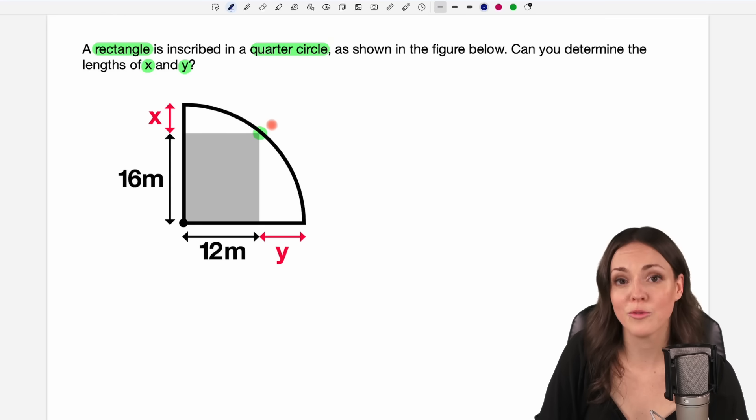And these points are usually very helpful and important to solve problems like this. So I want to draw the radius from the center of my circle to this special point here and I want to work with this.